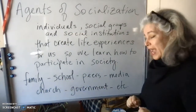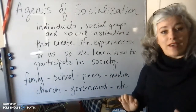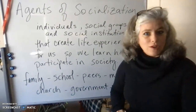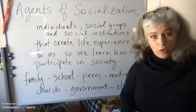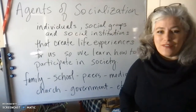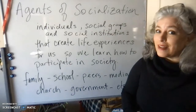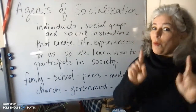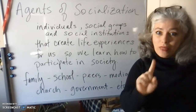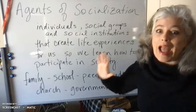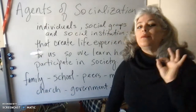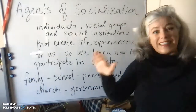Down here at the bottom of the board I have some examples. This is not a comprehensive list of agents of socialization — you can see I've got 'etc.' written at the very end. Almost all sociologists have differing points of view about whatever it is that we discuss, and there are of course different theoretical perspectives. But the one thing that every sociologist and every textbook agrees on — mark your calendars — is that family is the most important agent of socialization in any society anywhere.